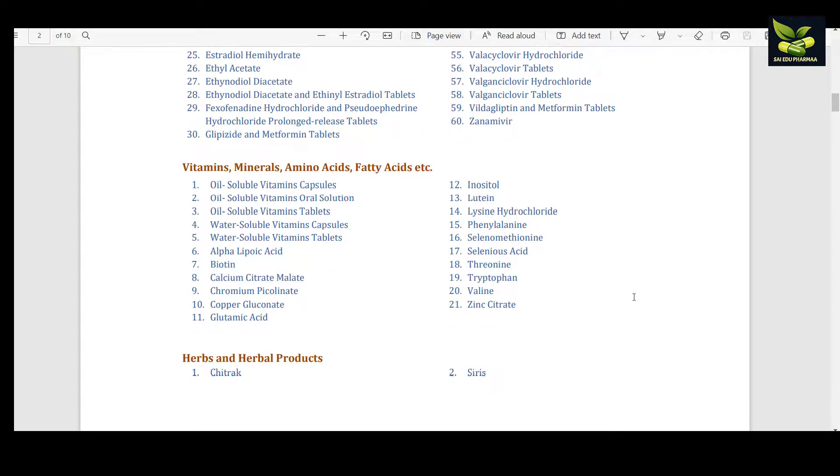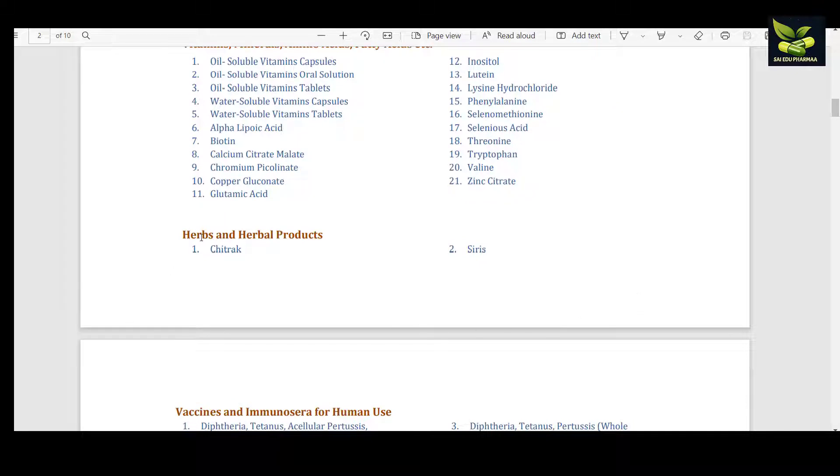These are the vitamins which are included. The two important herbs and herbal products are Chitra and Ceres - this is important, you should note it down.